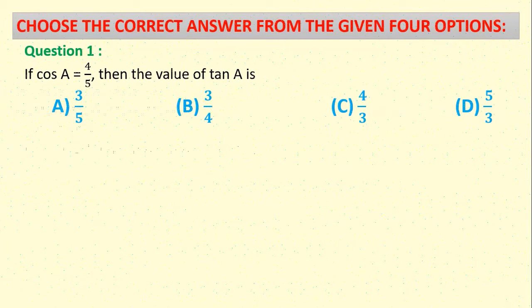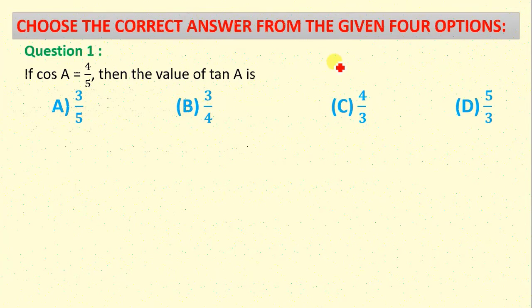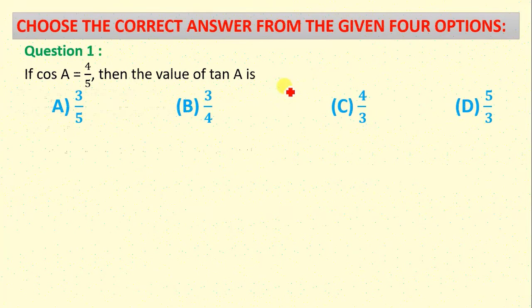If cos A = 4/5, find the value of tan A. Using the Pythagorean triplet 3, 4, 5 — the remaining side is 3. Using the Pythagorean theorem, tan A = 3/4.